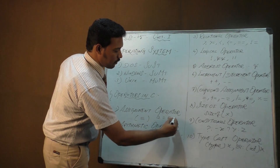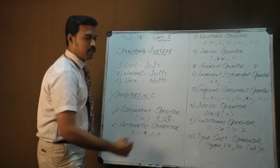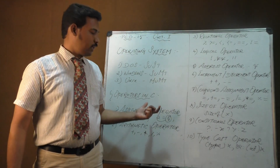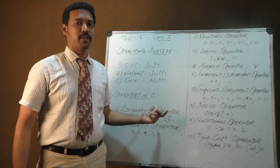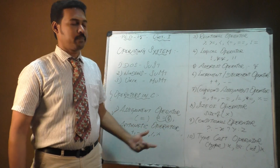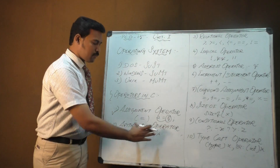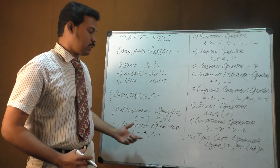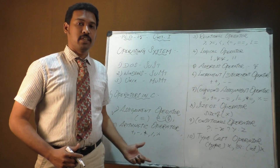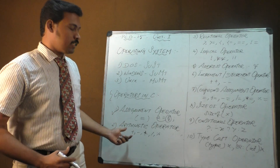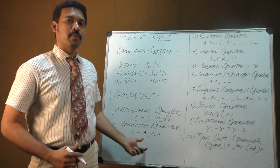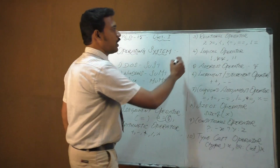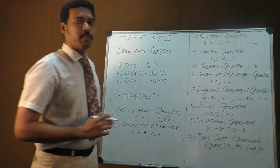For example, a = 5 assigns the value 5 to the variable a. The second operator is the arithmetic operator. There are five types: addition, subtraction, multiplication, division, and modular division.